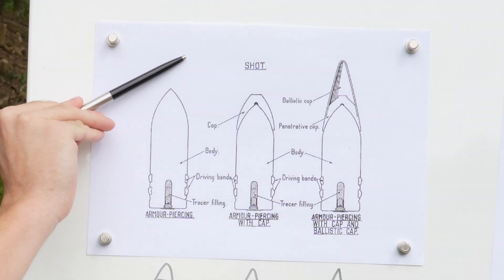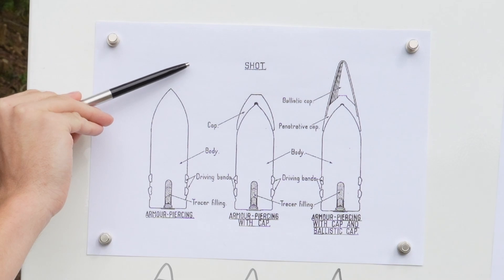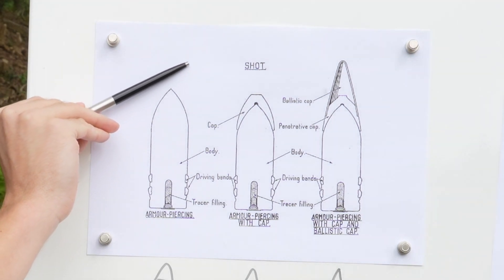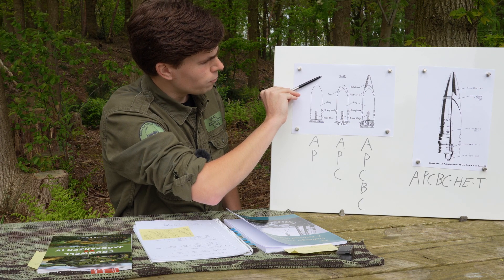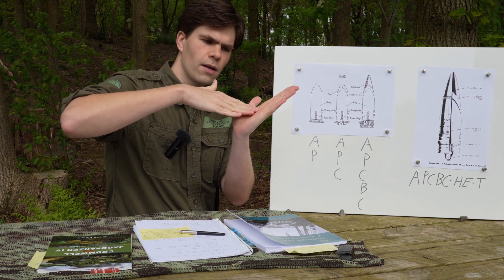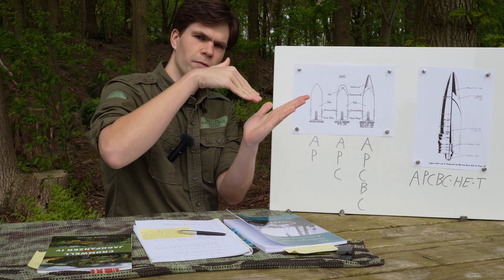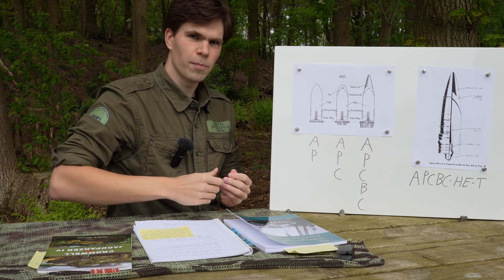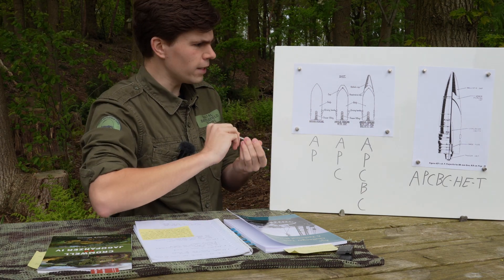What happens with a pointed projectile like this is instead of hitting a plate flat on it will hit at an angle and instead of the point digging straight into the armor plate it will glance off, finding the path of least resistance which is sliding along the armor plate instead of digging into it.